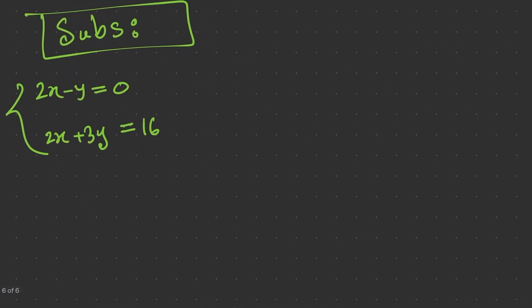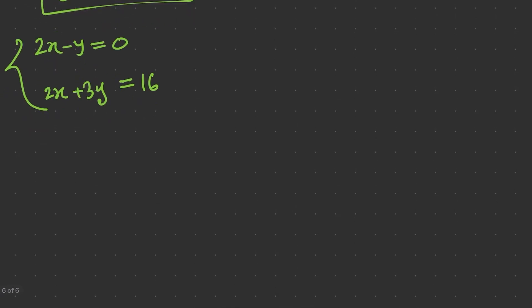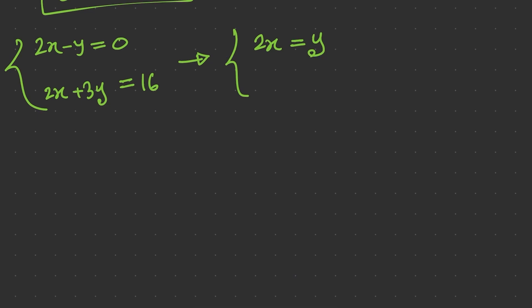The substitution method involves solving one of the equations for one variable and substituting that expression into the other equation. This is particularly useful when one equation is simple or can be easily rearranged. So, from the first equation: 2x equals y, or equivalently y equals 2x.